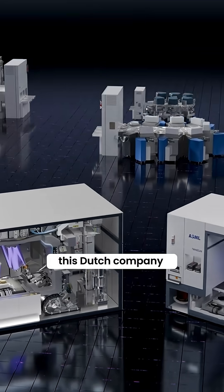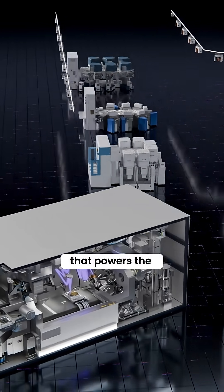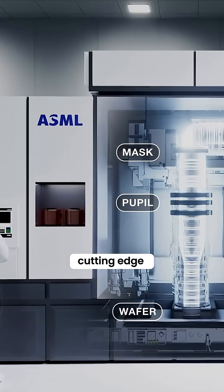Every company has competition in the market except ASML. This Dutch company holds a complete monopoly over the most advanced technology that powers the modern world called photolithography machines. Without them, no one can make cutting-edge computer chips.